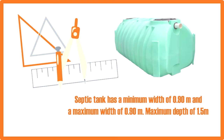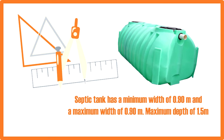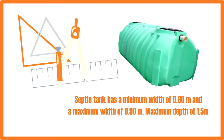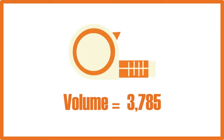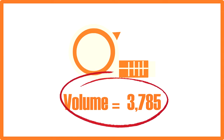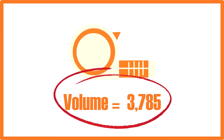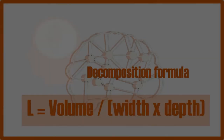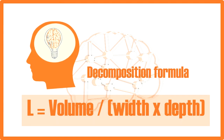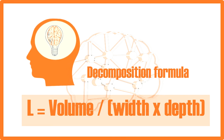The minimum depth of a septic tank averages 0.9 meters and it can have a maximum depth of 1.5 meters. To calculate the length of the septic tank, we are given a volume of 3.785 cu.m., a width of 1.2 meters, and a depth of 1.5 meters. To compute the length, we use the formula for the digestion chamber: L is equal to volume over width times height.